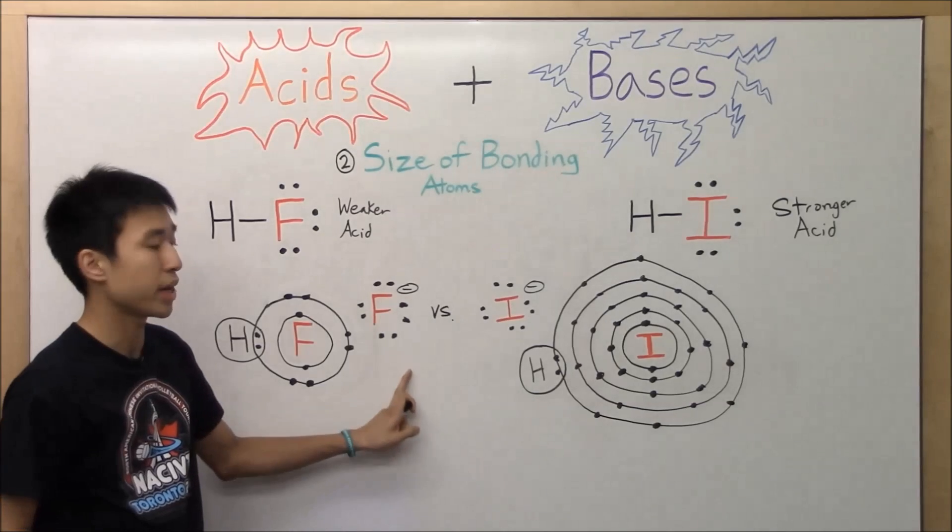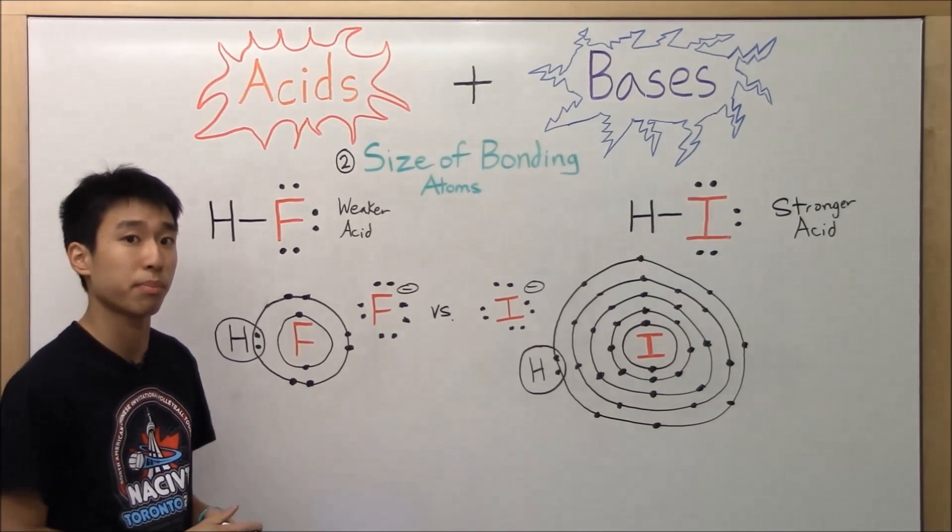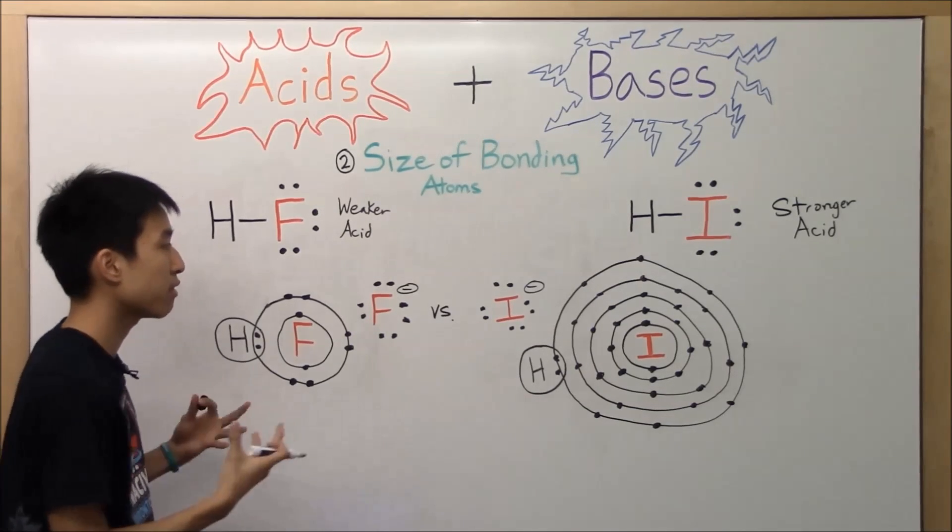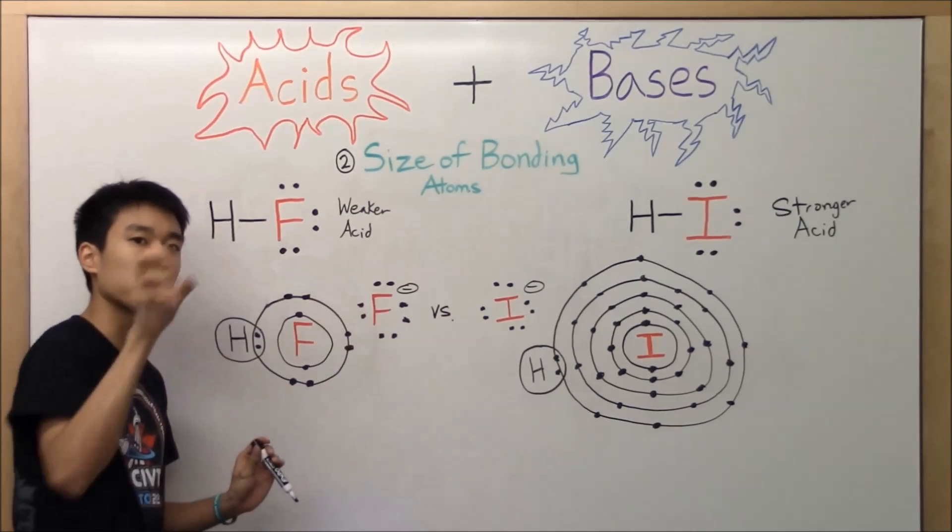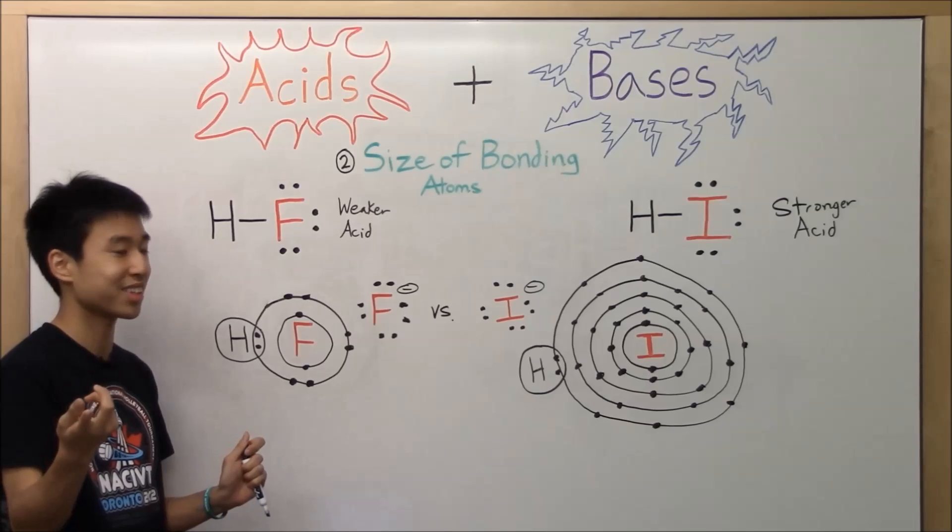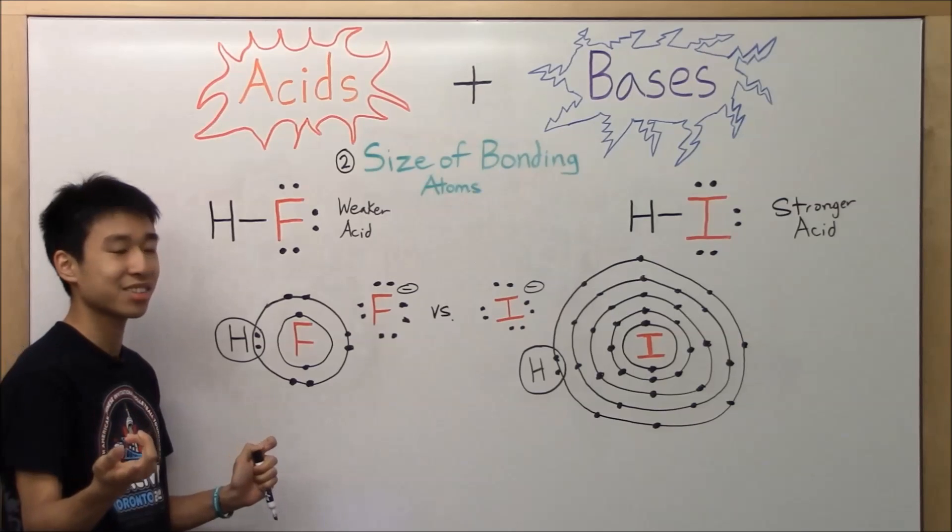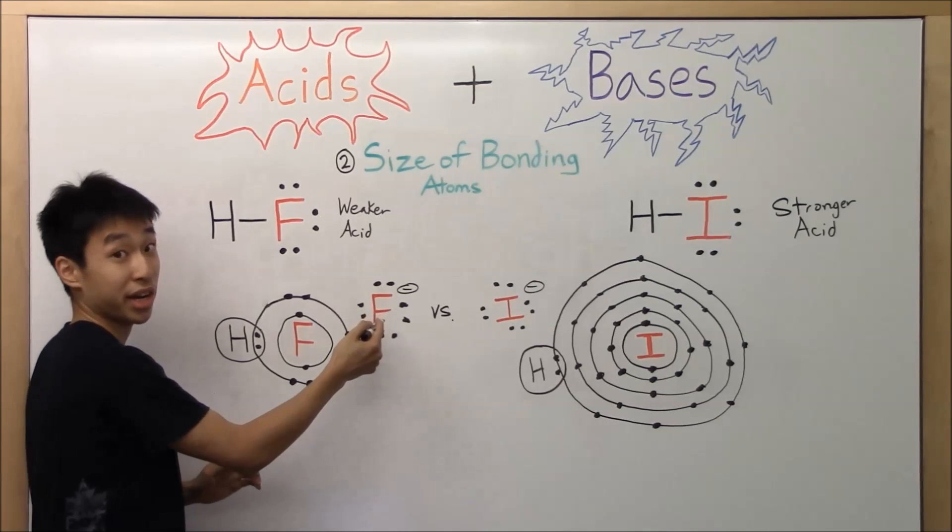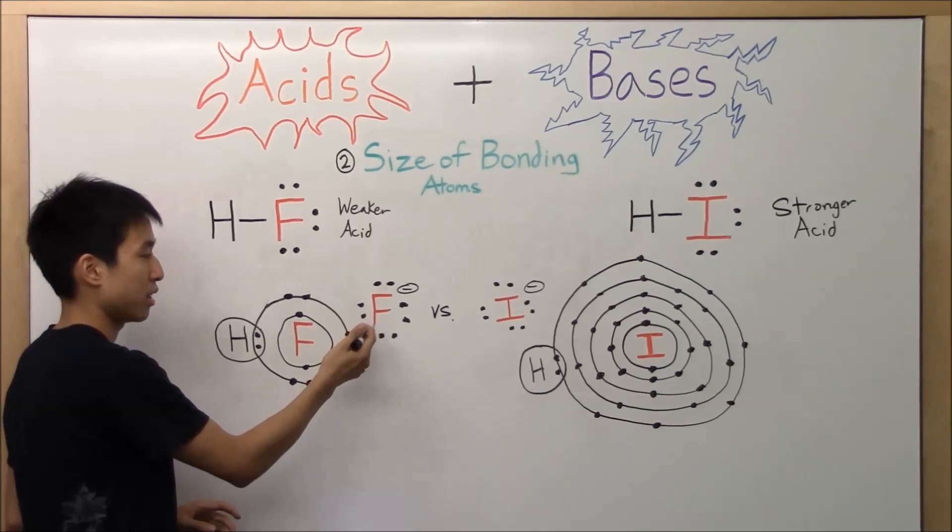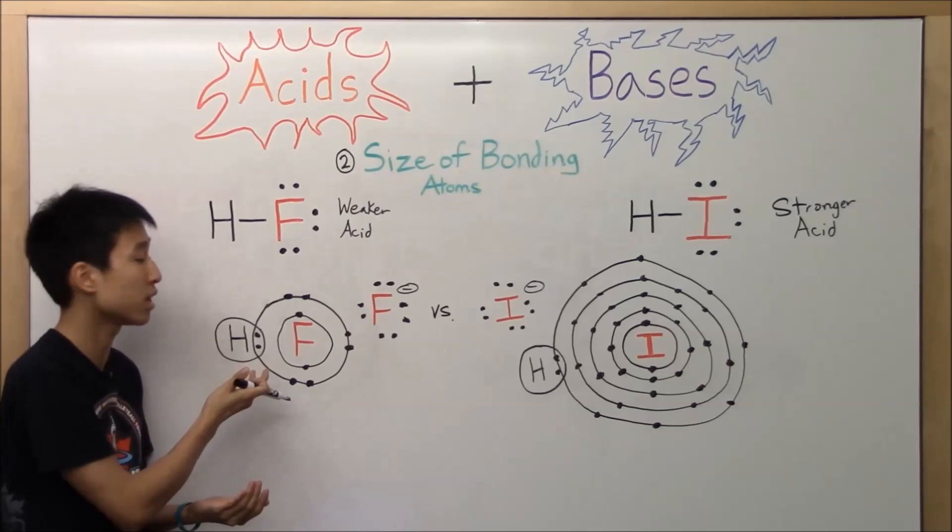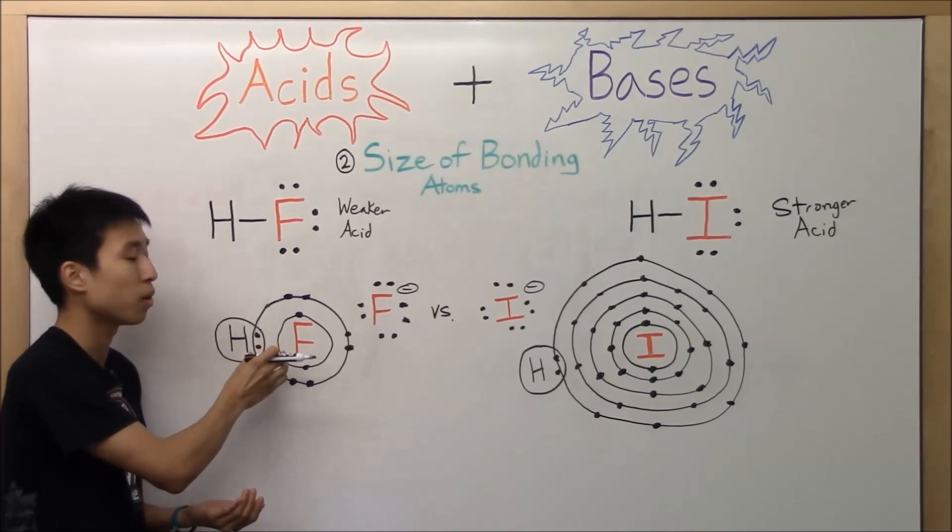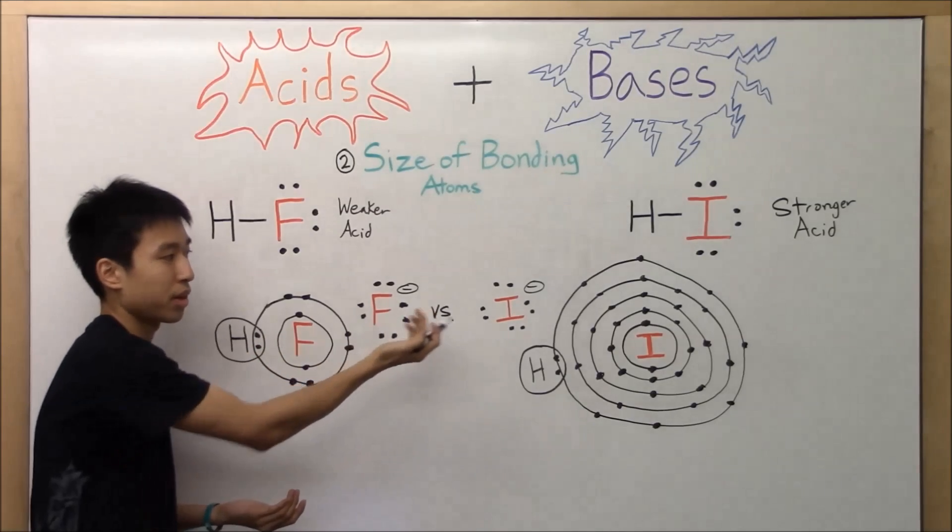But the question is, the fluoride ion versus iodide ion. Which one's going to be a better base? Well, you have to think of it in terms of which one's better at grabbing a proton and holding on to it. Okay? So take a second. It's going to be the fluoride ion because it can form a shorter bond with the hydrogen. Okay. And hold on to it better as a result compared to iodide.